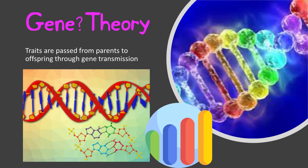Next up is the gene theory, which is another of the basic principles of biology. The main conceptual understanding framed by this theory is that traits are passed from parents to offspring through gene transmission. The principles that govern heredity were introduced by a monk named Gregor Mendel in the 1860s. These principles are now called Mendel's Law of Segregation and Law of Independent Assortment. Mendel is also honored for his work as the father of modern genetics. Genes, which are the basic unit of an expressed trait, are located on chromosomes and consist of DNA.